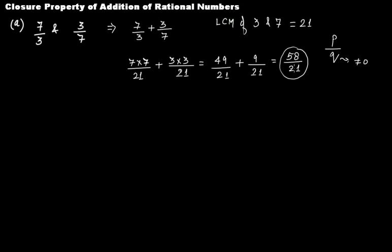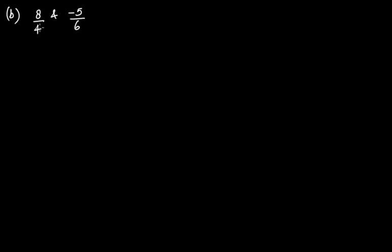So this satisfied this condition. It is 21 and it's not equal to zero. So from this example we can say that yes, rational numbers are closed under addition. Let's take another example: 8/4 and -5/6.